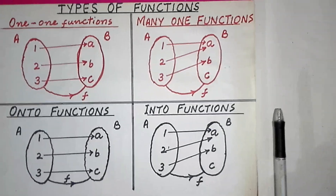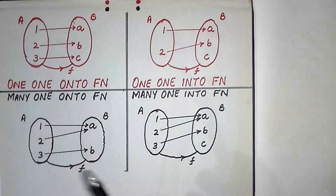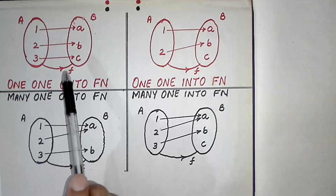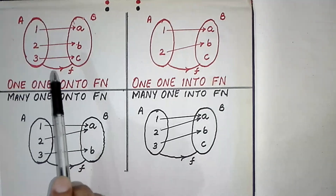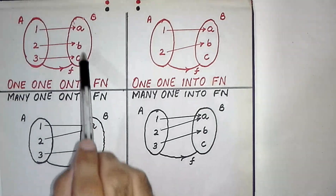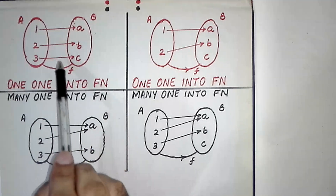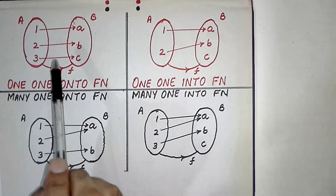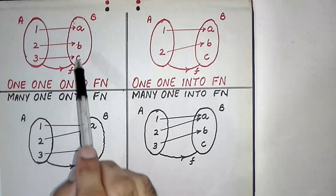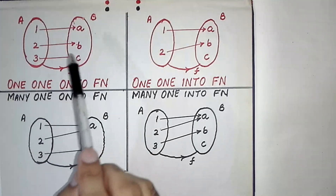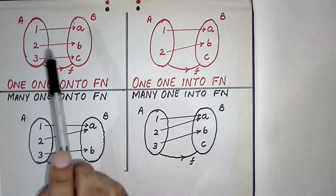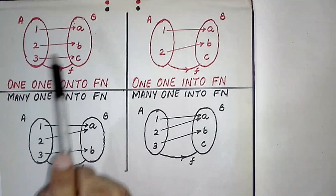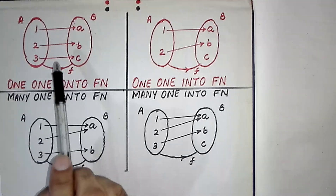If a function is both one-one and onto, then it is called a one-one onto function or bijective function. Here the second elements of all ordered pairs are non-repeated, so it is one-one, and the range is equal to co-domain, so it is also onto. Therefore this is an example of a one-one onto function.